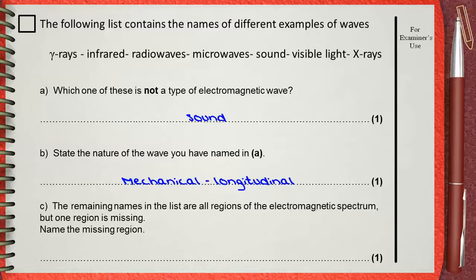C. The remaining names in the list are all regions of the electromagnetic spectrum, but one region is missing. Name the missing region. That's why you need to memorize the parts of the electromagnetic spectrum. And you will see that the only part that is missing from above is ultraviolet.